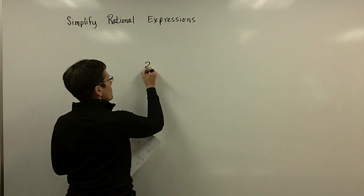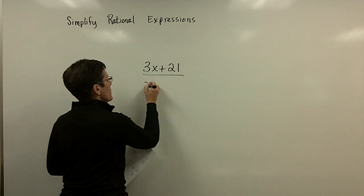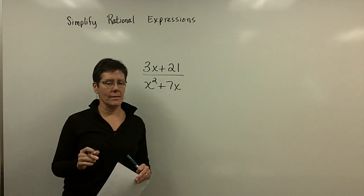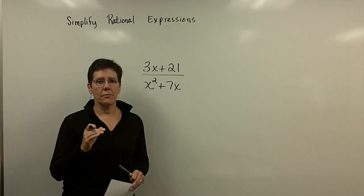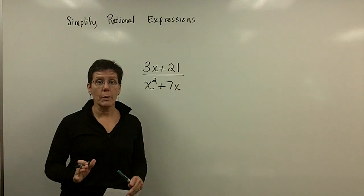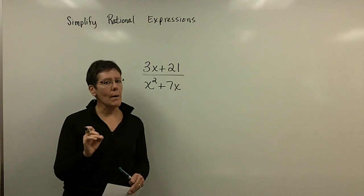Let's go with 3x plus 21 over x squared plus 7x. So in case I haven't said this enough, you have to factor everything before you reduce fractions, algebraic fractions. So remember, your first step in factoring is to take the greatest common factor out.